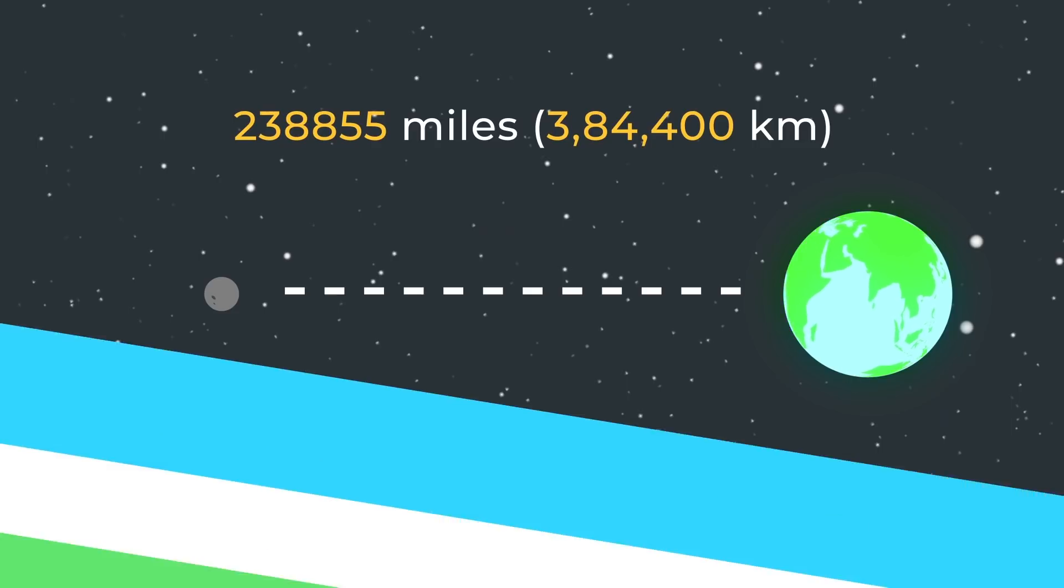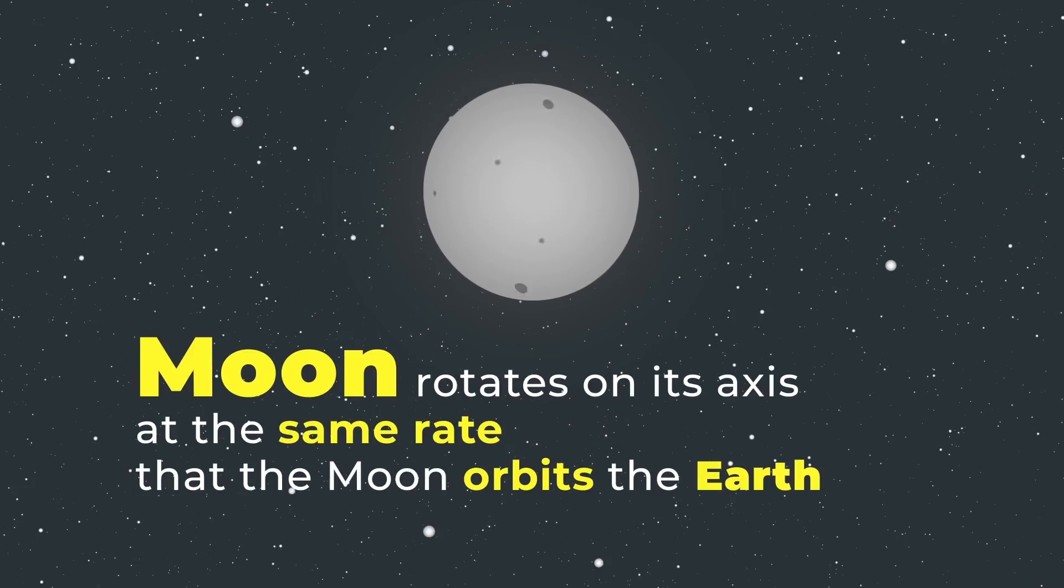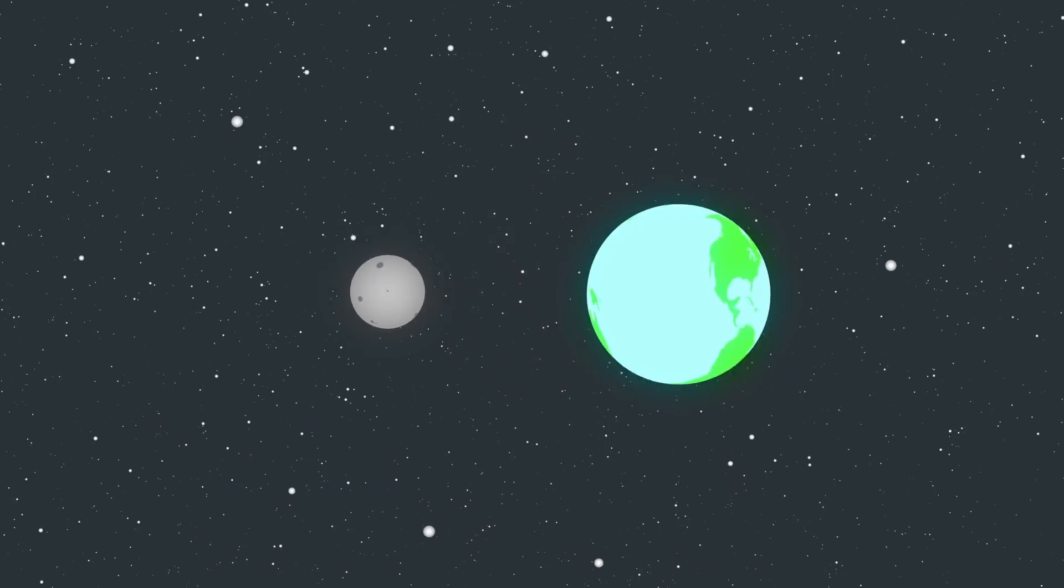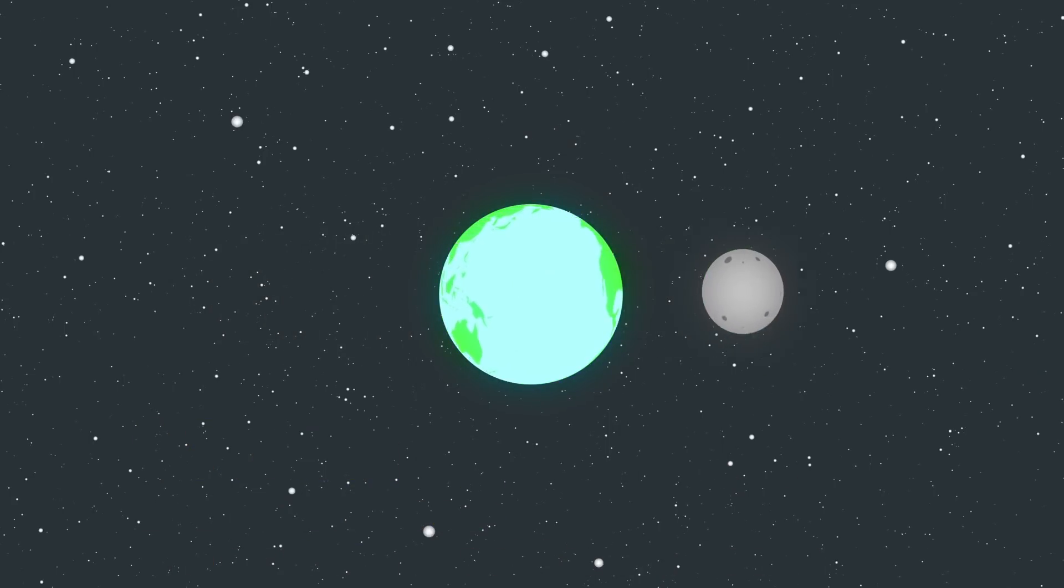The moon rotates on its axis at the same rate that the moon orbits the earth. A situation known as tidal locking or synchronous rotation. And that's why we always see the same phase of the moon.